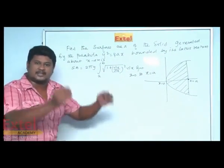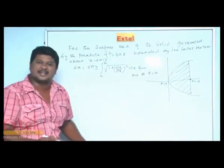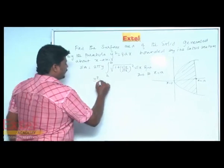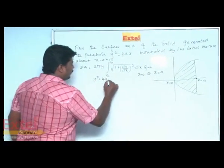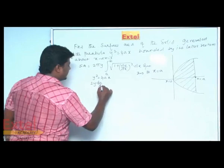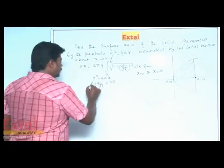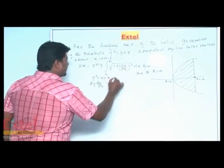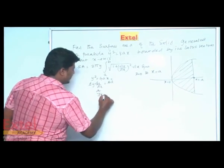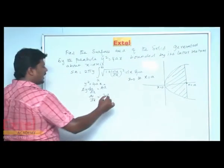It is given that the parabola is y squared equals 4ax. Let us find dy/dx. Differentiating: 2y (dy/dx) equals 4a, so dy/dx equals 2a divided by y.